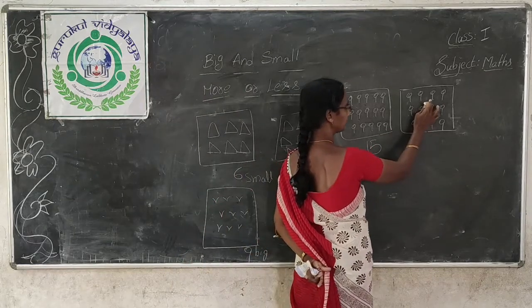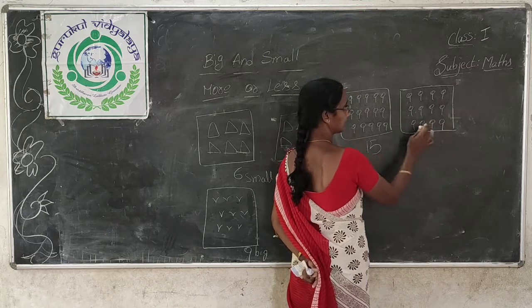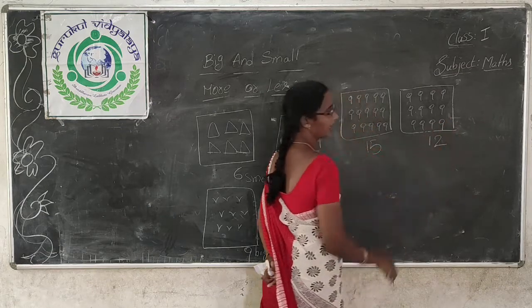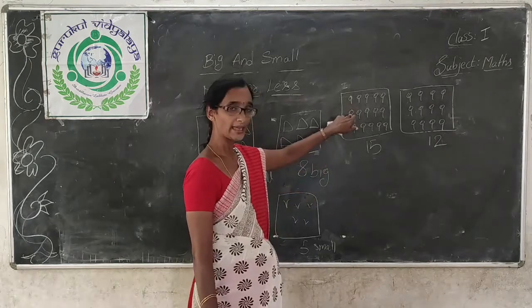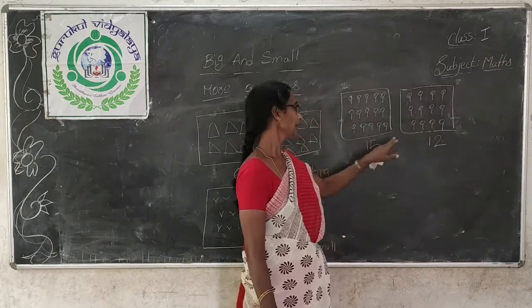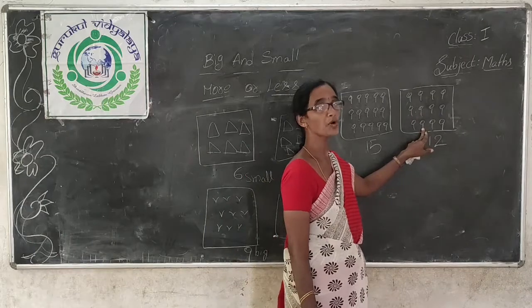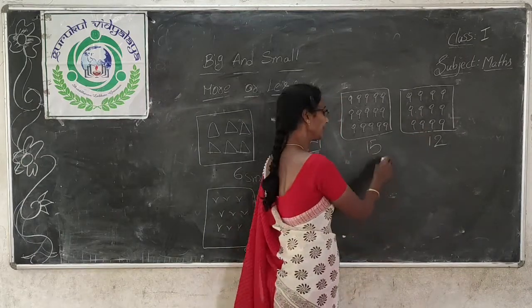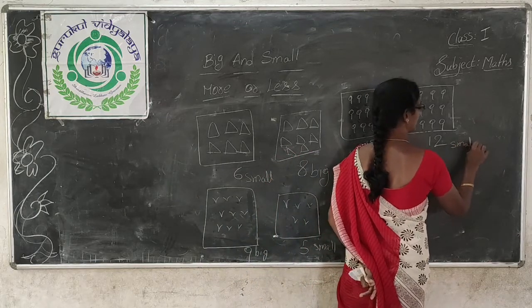And 1, 2, 3, 4, 5, 6, 7, 8, 9, 10, 11, 12. In this group 12 lollipops are there. So which group has more lollipops? This group has more lollipops and this group has less lollipops. This group has big number of lollipops and this group has small number of lollipops. So 15 is the big number and 12 is the small number.